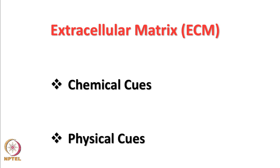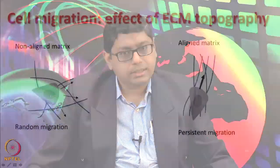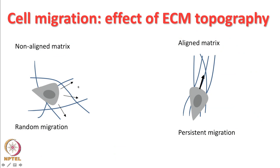You can divide the entire gamut of cues that the ECM provides to cells into chemical cues or physical cues. In the last class we started discussing the effect of topography — the relative orientation of ECM fibers. A cell migrating on a non-aligned matrix exhibits random migration, whereas aligned fibers provide a directional cue causing the cell to migrate along one particular line.